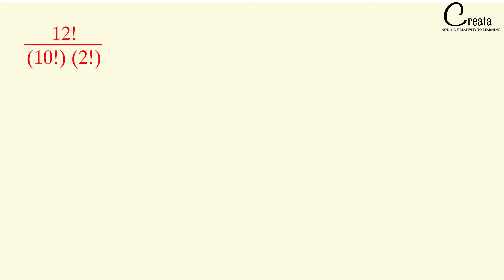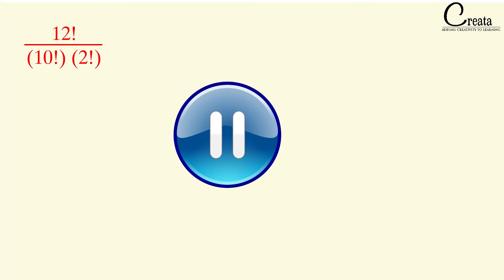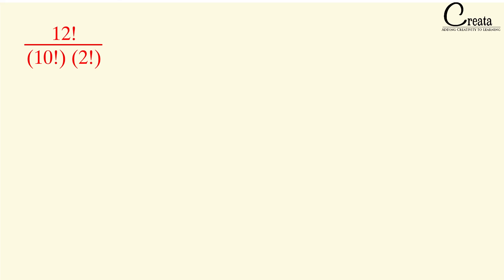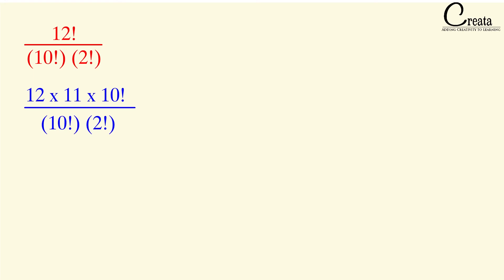The next question is 12! ÷ (10! × 2!). Pause and try to solve it. We rewrite 12! as 12 × 11 × 10!, so the 10! terms cancel out. We are left with (12 × 11) ÷ 2! = 132 ÷ 2 = 66.